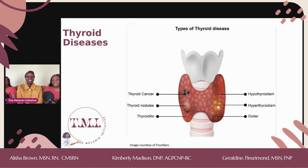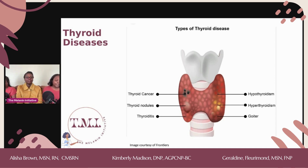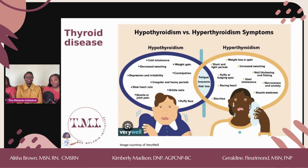The diseases displayed include thyroid cancer, thyroid nodules, thyroiditis — which could be from inflammation or infection of the thyroid — goiter, hypothyroidism, and hyperthyroidism. Hypothyroidism is where the thyroid gland does not produce enough thyroid hormone, and inversely, hyperthyroidism is where the thyroid gland produces too much thyroid hormone. Having either one is not good.